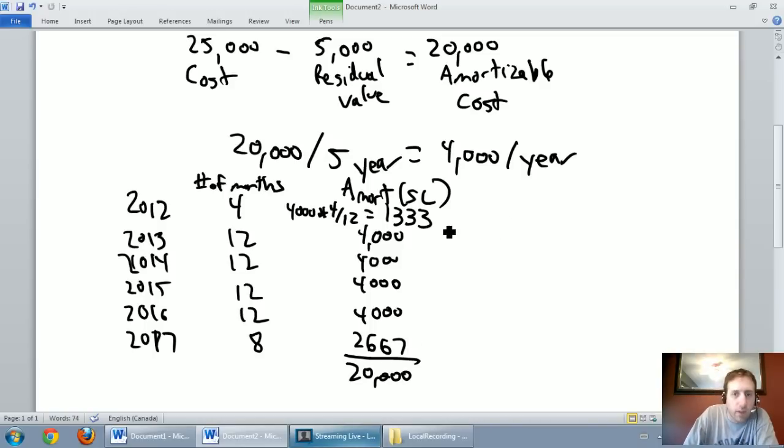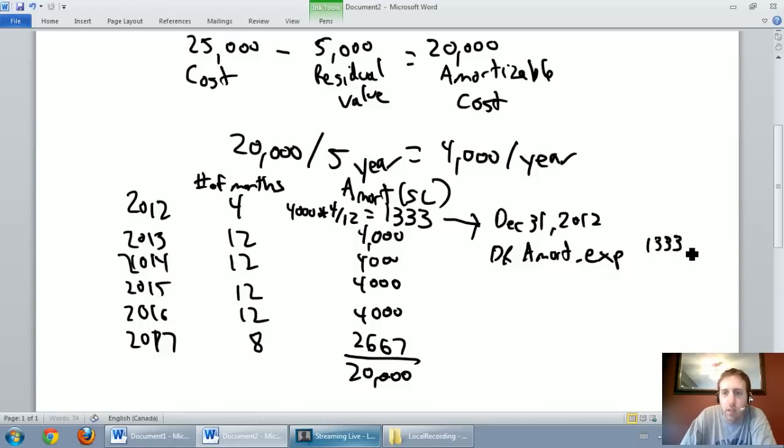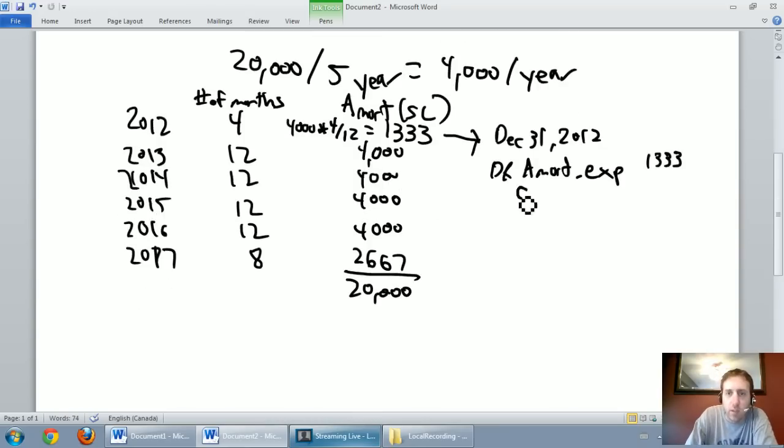Now I want you to remember as you're doing this, our journal entry for amortization - I'll just do the one for 2012 - always is going to be the same. So on December 31, 2012, my fiscal year end, I'm going to debit amortization expense for 1333 and I'm going to credit accumulated amortization for 1333. I just want you to not lose sight that that's what the journal entry is for amortization. In 2013 I would debit amortization expense, credit accumulated amortization for $4,000, and again that would happen at my fiscal year end.